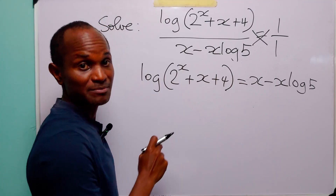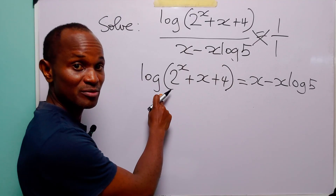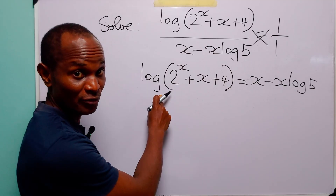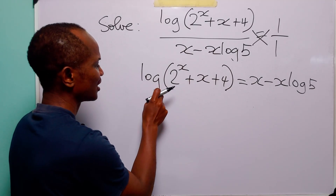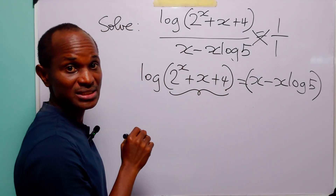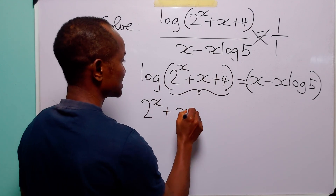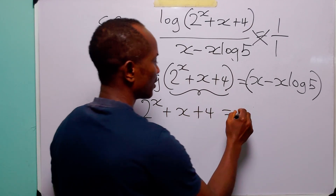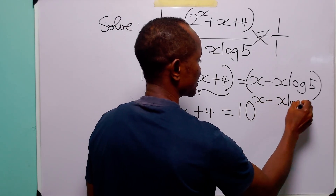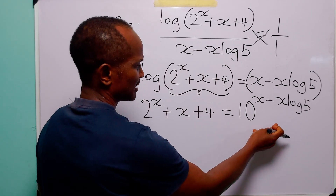Now, when we have a statement like this it simply means that the base of the logarithm — in this case 10, because remember when we do not specify the base it means we are working in base 10 common logarithm — raised to this power is equal to the other side. That is, 2 to the power x plus x plus 4 is going to be equal to 10 to the power x minus x log 5.